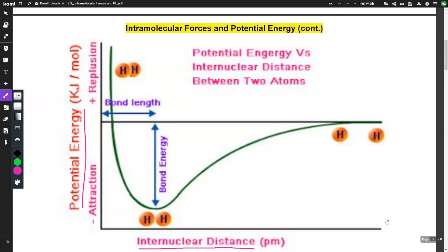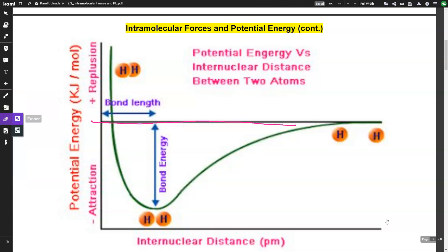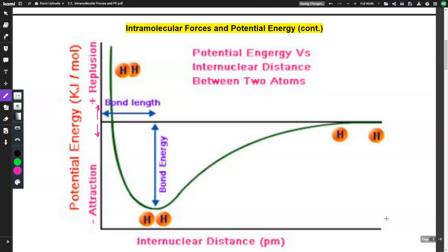When potential energy is zero — right on the y-axis — there is no attraction or repulsion. When we dip below that zero point we are experiencing attraction. When we go above the zero mark we're experiencing repulsion. When we're on the zero mark there is neither attraction nor repulsion.